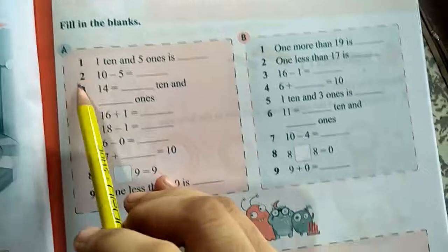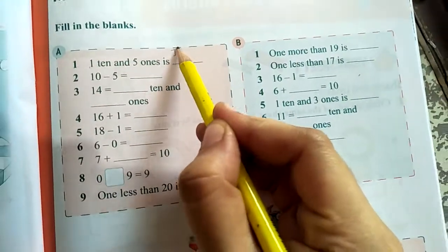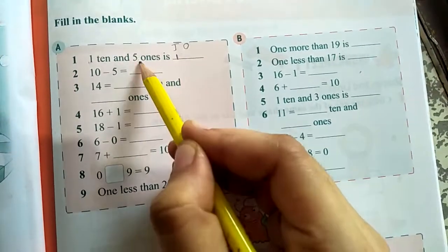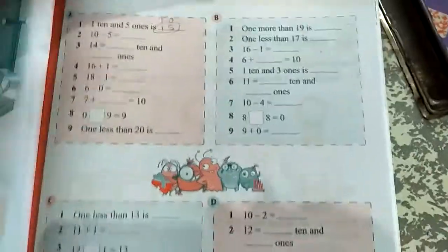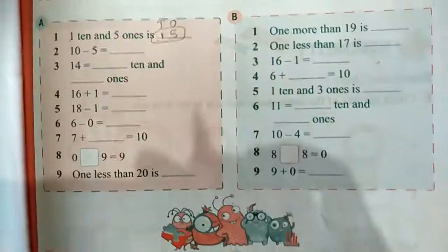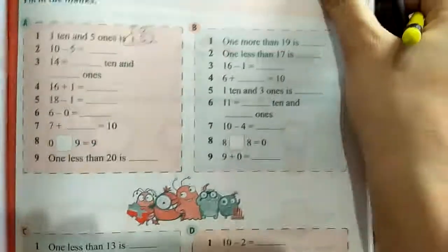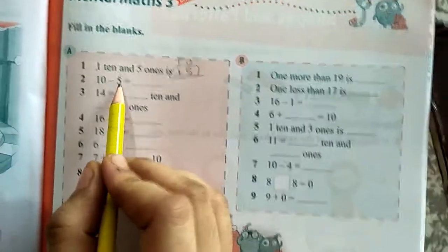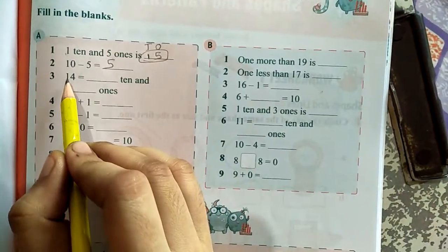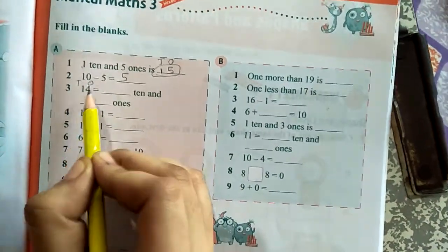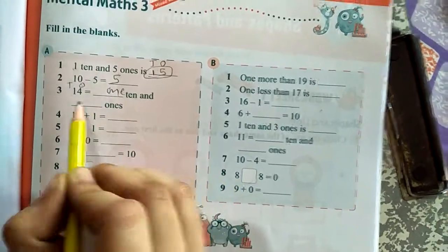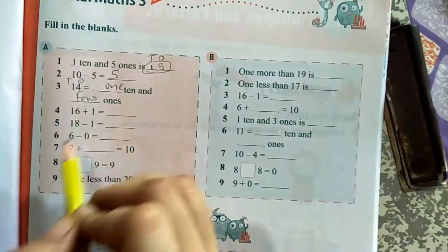It is just like a revision worksheet. 1 ten, 5 ones is what? So this is tens place, this is ones place. 1 ten and 5 ones, so number is 15. Understood? Question from lesson number 1, number making question. 10 minus 5, simple: 5. 14, dash tens and dash ones. So this is tens and this is ones. So 1 ten, 4 ones.